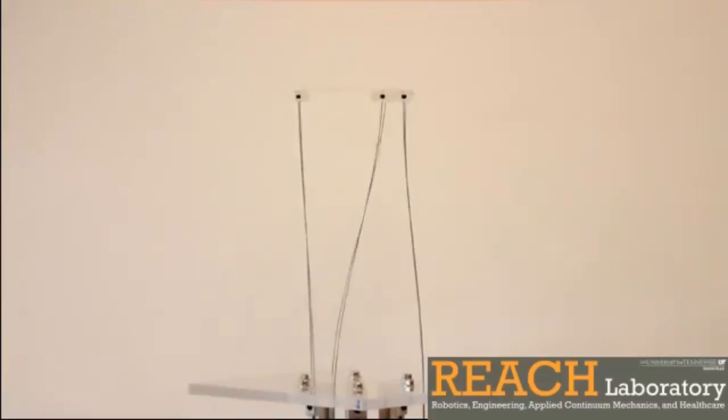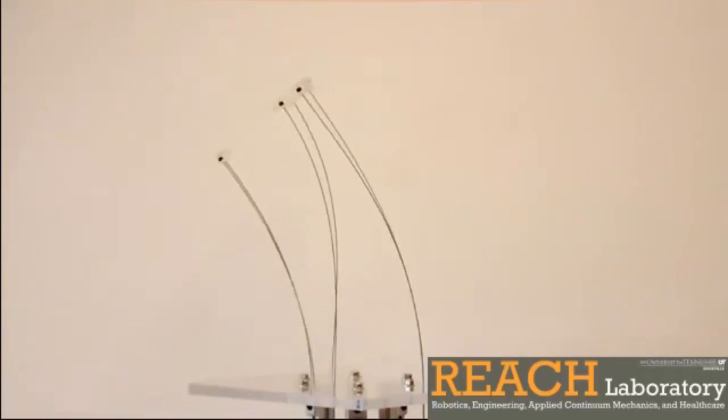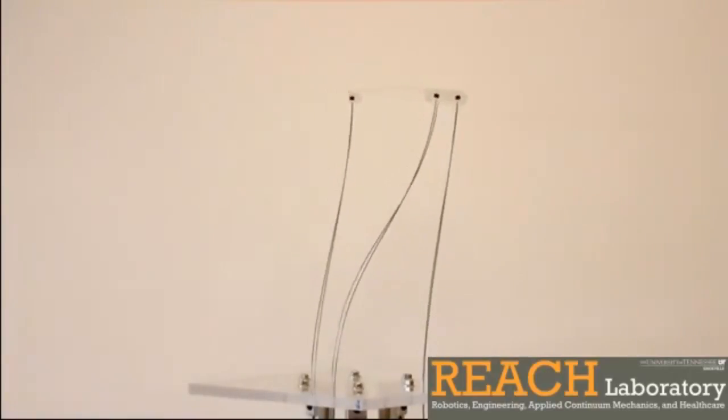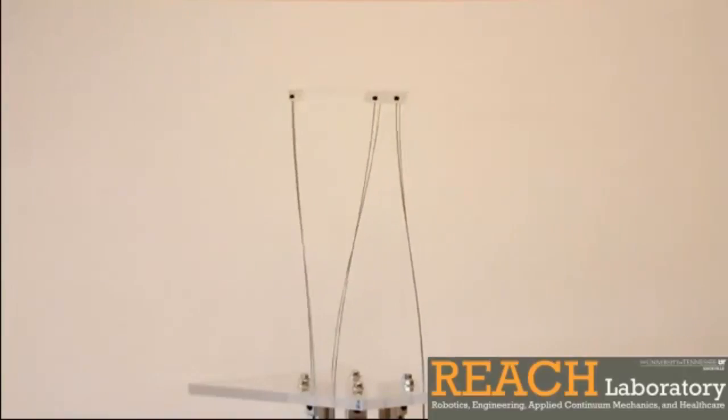Continuum robots are defined by their ability to achieve movement through controlled deformation of a continuous elastic structure. For example, this parallel continuum robot uses six flexible rods attached to independent linear actuators, which are coupled together to achieve sixth-off control of the end-effector.